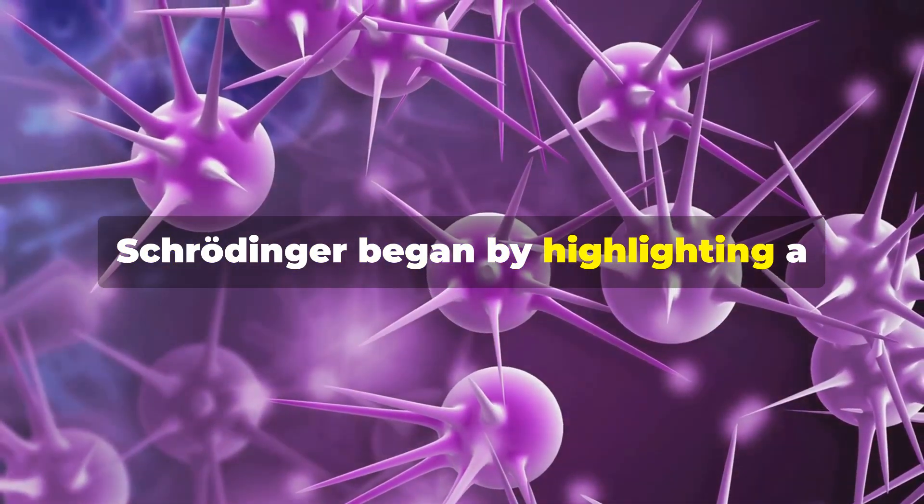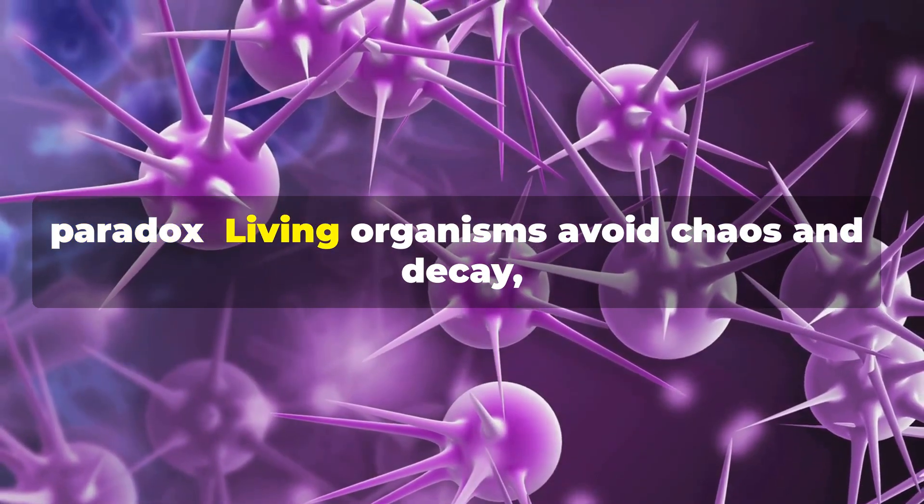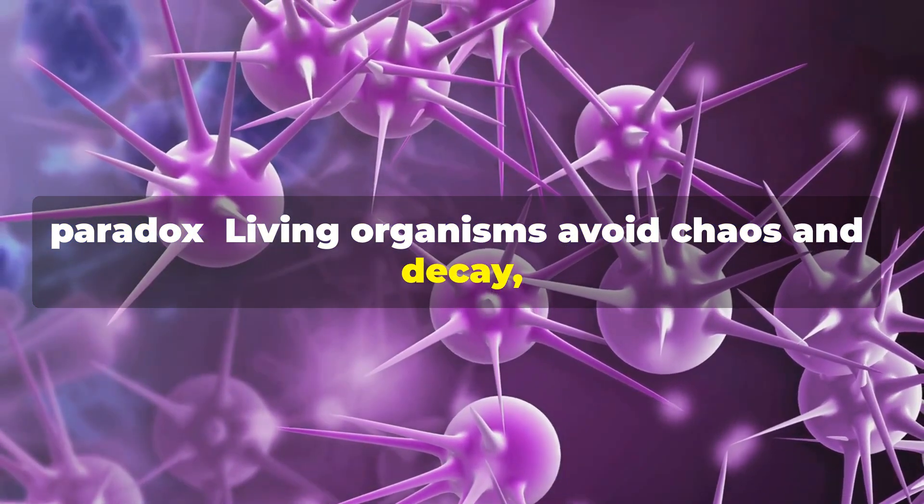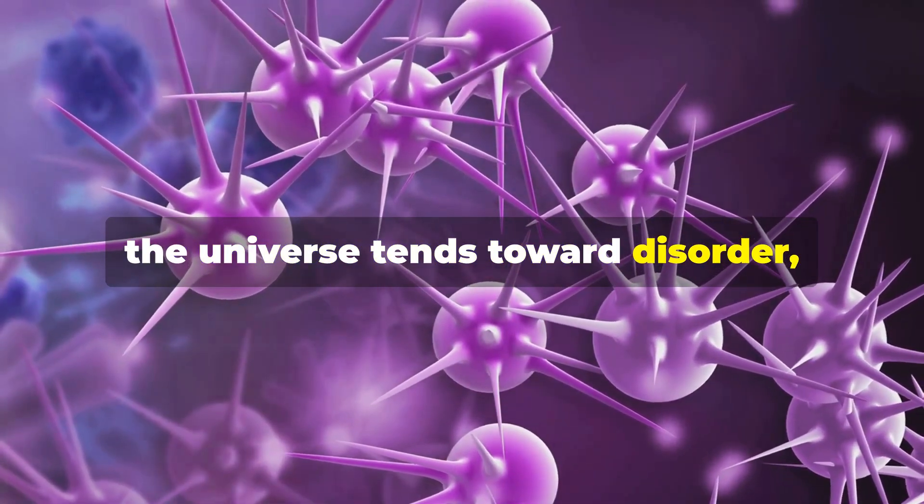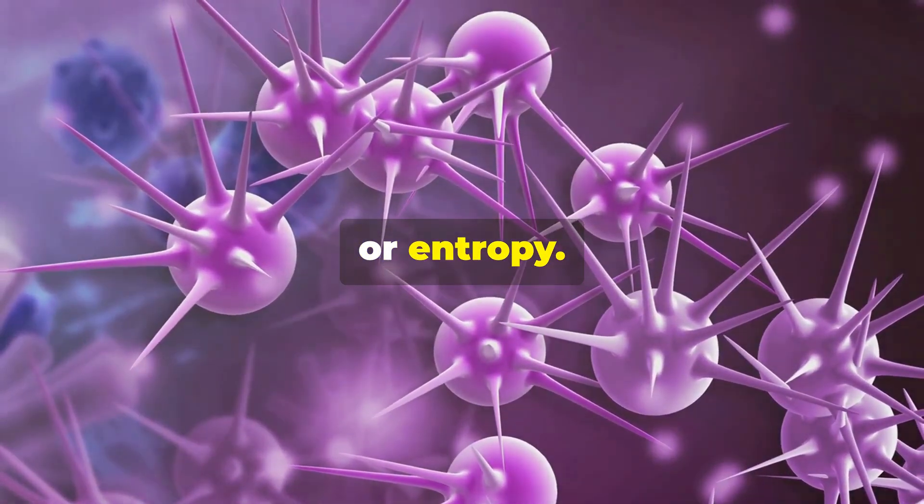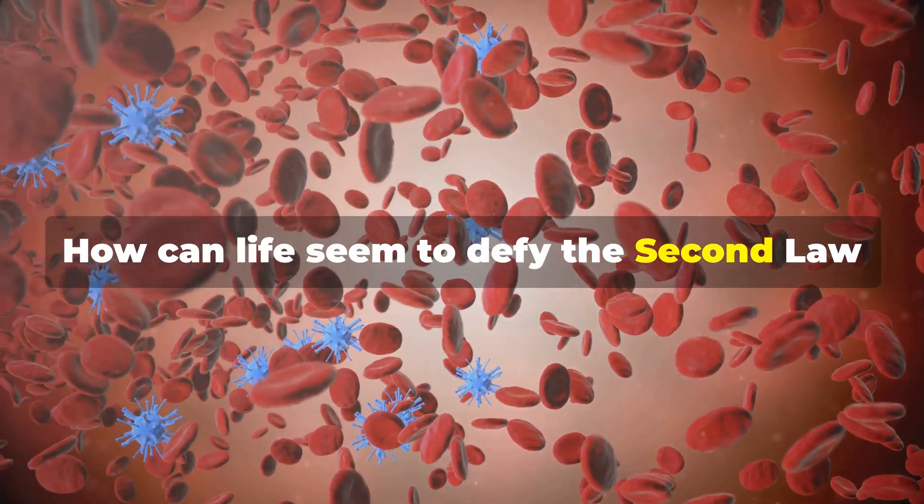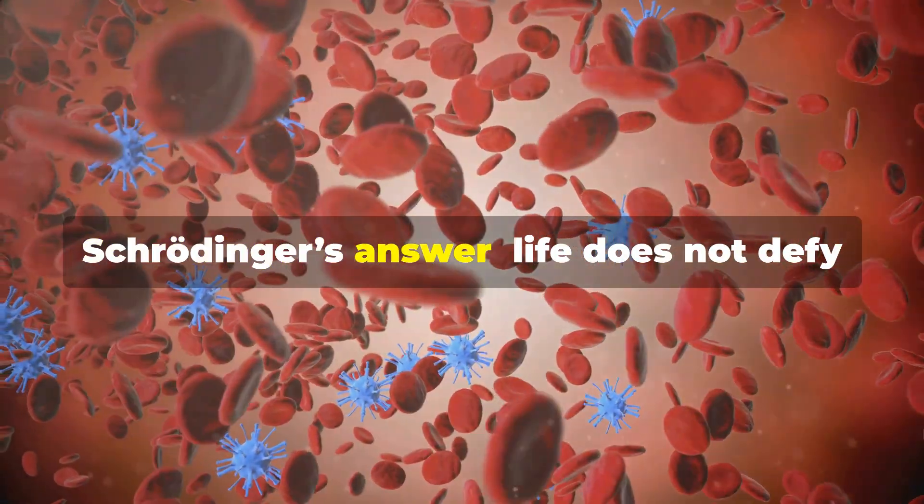Schrödinger began by highlighting a paradox. Living organisms avoid chaos and decay, maintaining order even as physics says the universe tends toward disorder or entropy. How can life seem to defy the second law of thermodynamics?